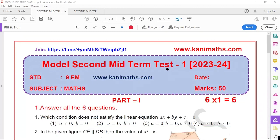Standard 9th English medium, subject maths, maximum marks 50. This is graph geometry and chapter. We will answer the questions.